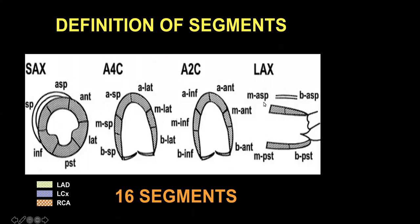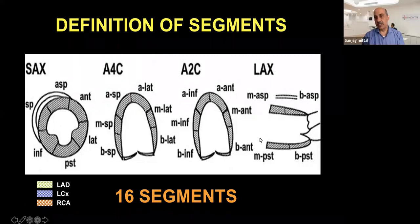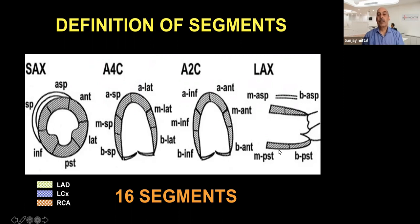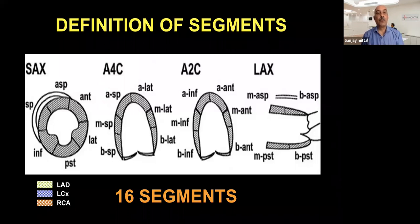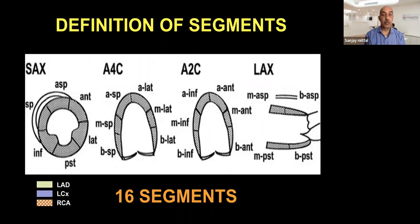The parasternal long axis view shows basal anterior septum, mid anterior septum, basal posterior, and mid posterior. It is also very important to understand how the segments vary with coronary distribution.